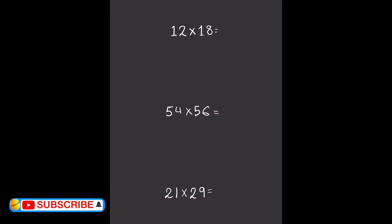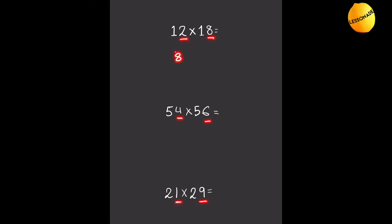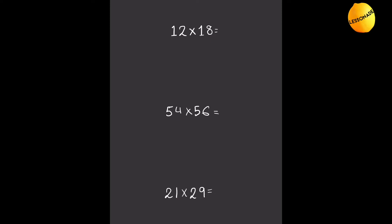The thing that's special about these numbers is that if you notice all of these numbers, their units place — the summation of the units place always adds up to 10. So in the first one, 8 plus 2 adds up to 10, 6 and 4 add up to 10, and 9 and 1 also add up to 10. That's one special property.